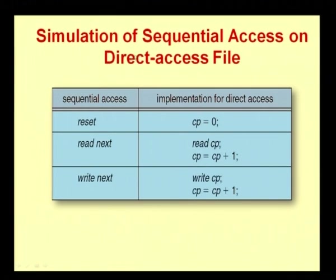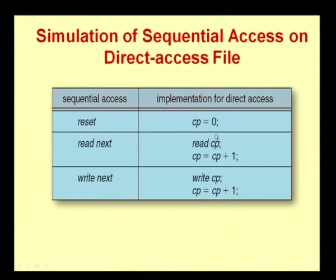Let us see the simulation of sequential access. We use a counter named cp initialized to 0. When reading, we use read(cp) and then cp = cp + 1. When writing, we write to cp and again cp = cp + 1. This is how the sequential file access pointer increments with each read or write operation.